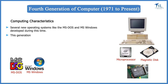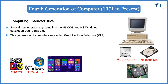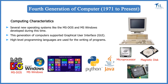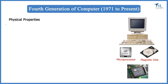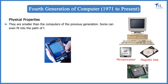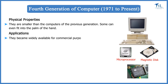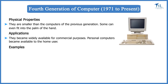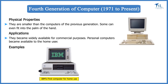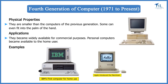This generation of computers supported Graphical User Interface (GUI), a user-friendly interface that allows users to interact with the computer via menus and icons. High-level programming languages are used for writing programs, and the computation time is in picoseconds. These computers are smaller than previous generations and some can even fit into the palm of the hand. They became widely available commercially. In 1981, IBM introduced the first computer for home use, and in 1984, Apple introduced the Macintosh.